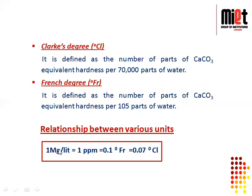Now, what is the interrelation between all four units? One mg per liter equals one ppm. One mg per liter equals 0.1 degree French. One mg per liter equals 0.07 degree Clark.